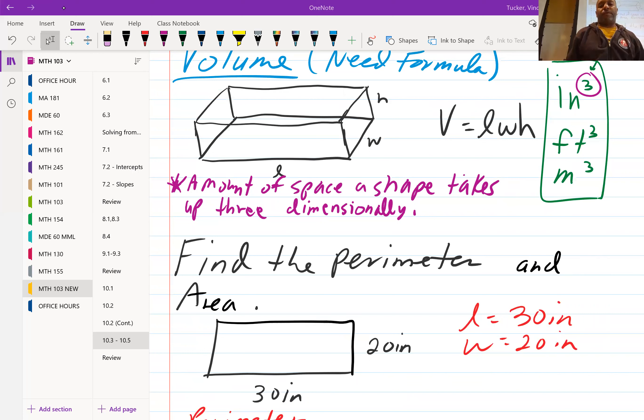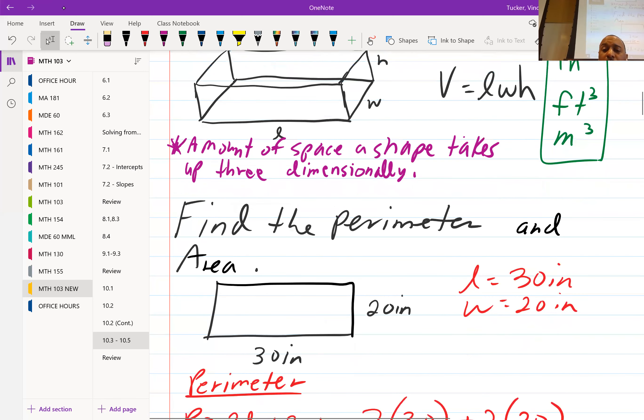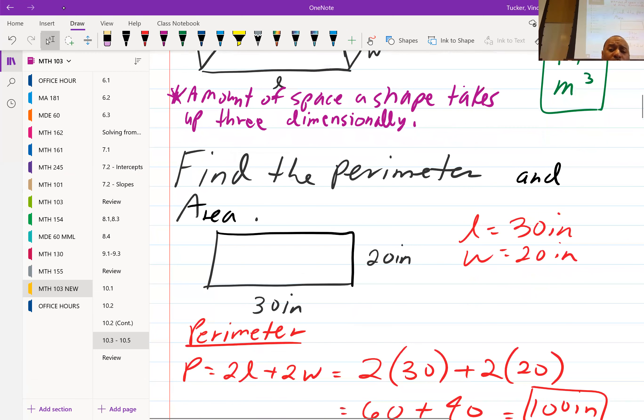The first example, I want to find a perimeter and the area of this rectangle. All right, so our length is 30 inches, width is 20.